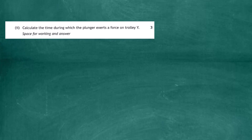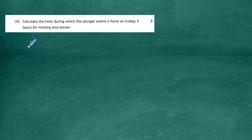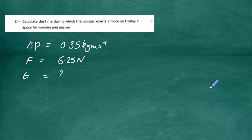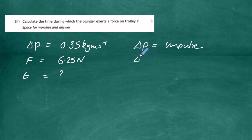Part two of the question asks us to calculate the time during which the plunger exerts a force on trolley Y. We know the change of momentum delta p is 0.35 kg·m/s, and the force acting on the trolley was 6.25 newtons. Recognising this as an impulse problem, we use the fact that change of momentum equals impulse, which equals force multiplied by time (Ft). Change of momentum and impulse always go hand in hand.